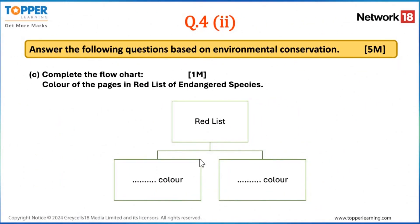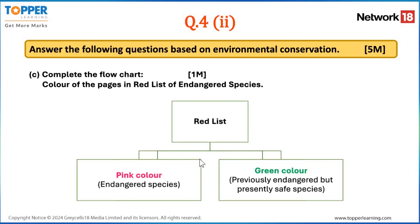Let's see one more sub question — complete the following chart, a 1-marker question: 'Color of the pages in the red list of endangered species.' If you have seen the red list book which details the list of endangered species, there are two types of pages. Pink colored pages list the names of the endangered species, and green colored pages list the names of species which were previously endangered but are presently safe. So pink and green were the expected answers to write in the paper.